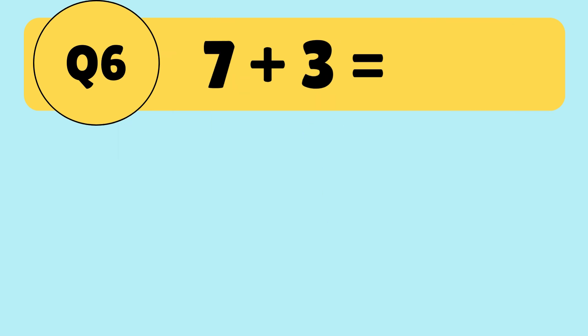Last one for now. 7 plus 3. Which number is bigger? Yes, 7 is the bigger number. And the smaller number? Right, it's 3.